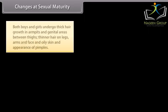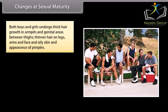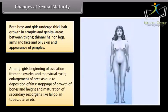Changes at sexual maturity: both boys and girls undergo thick hair growth in armpits and genital areas, thinner hair on legs, arms and face, and oily skin with appearance of pimples. Among girls: beginning of ovulation from the ovaries and menstrual cycle, enlargement of breasts due to deposition of fats, darkening of nipple skin, stoppage of growth of bones and height, and maturation of secondary sex organs like fallopian tubes, uterus, etc.